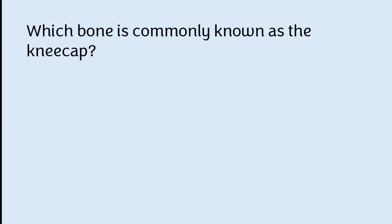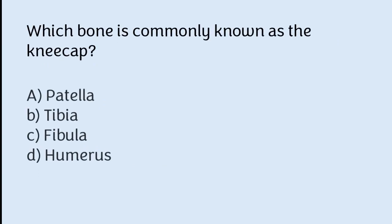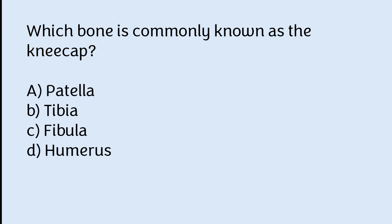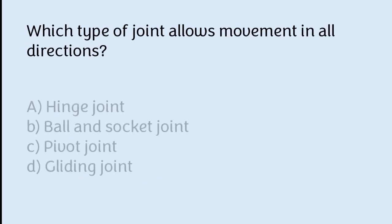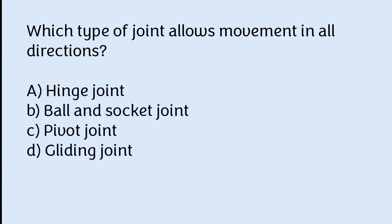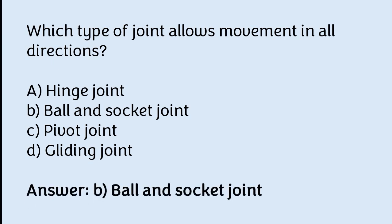Which bone is commonly known as the kneecap? Patella, tibia, fibula, or humerus. The correct answer is option A — the patella bone is commonly known as the kneecap. Which type of joint allows movement in all directions? Hinge joint, ball and socket joint, fluid joint, or gliding joint. The correct answer is option B — the ball and socket joint allows movement in all directions.